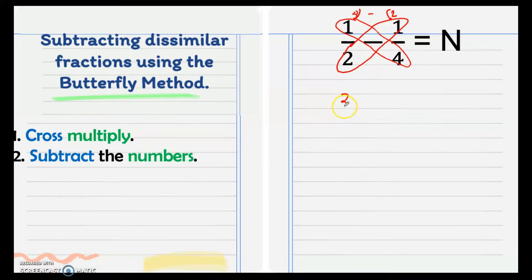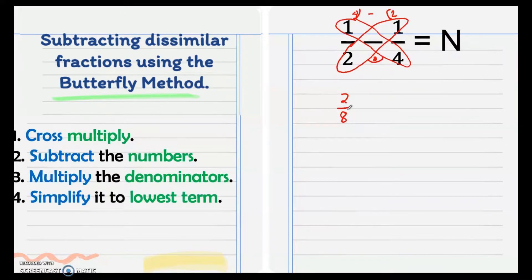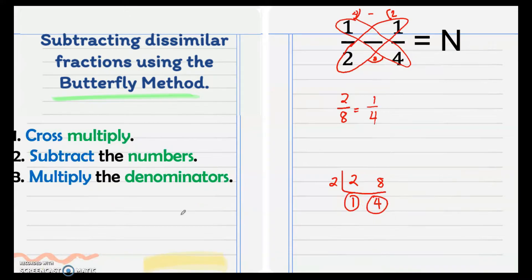After that we multiply the denominators. The denominators are 2 and 4, so when we multiply that we put it here — it's 8. So our denominator now is 8. After multiplying the denominators, we simplify to lowest terms. 2 and 8 have a common factor, so we use the continuous division method. The common factor is 2: 8 divided by 2 is 4, and 2 divided by 2 is 1, so our answer is 1/4.